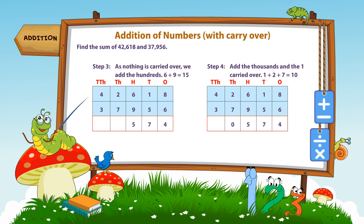Step 4. Add the thousands and the one carried over. 1 plus 2 plus 7 is equal to 10.